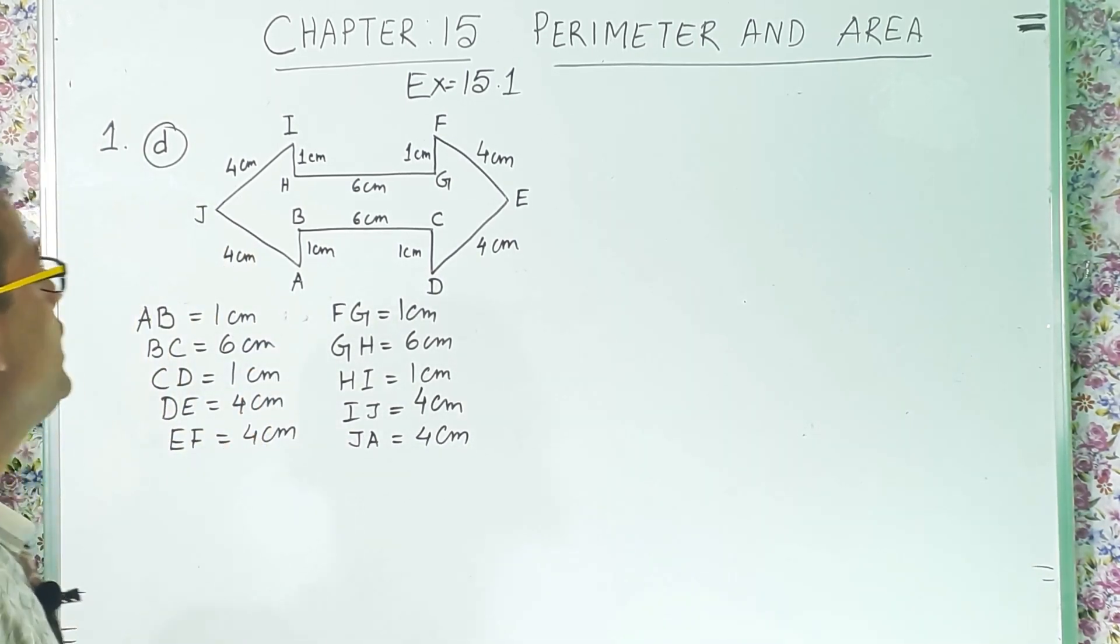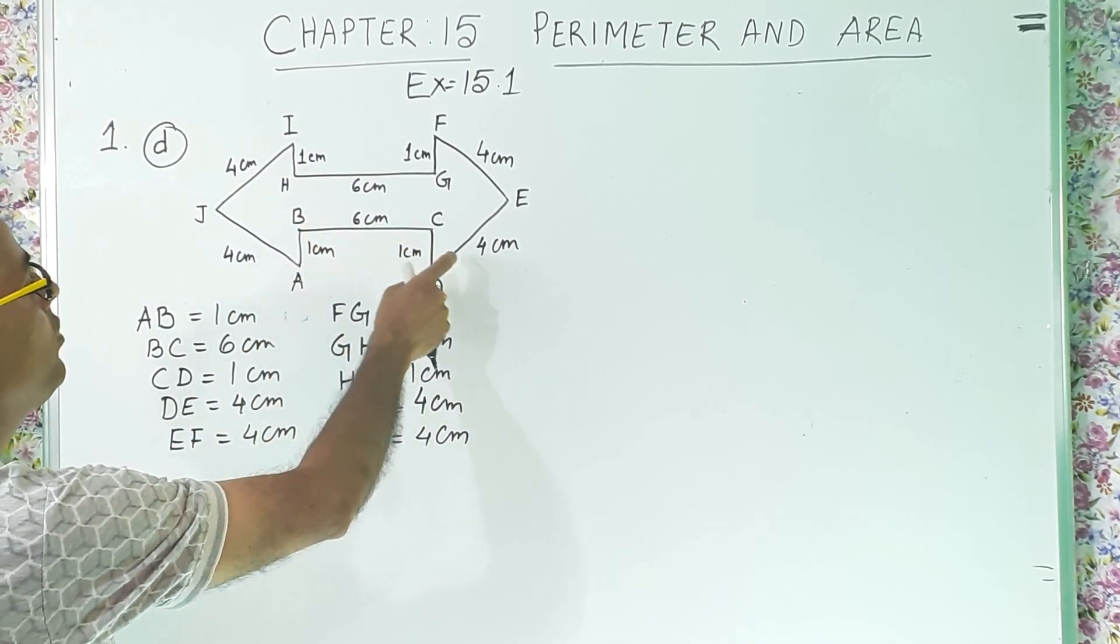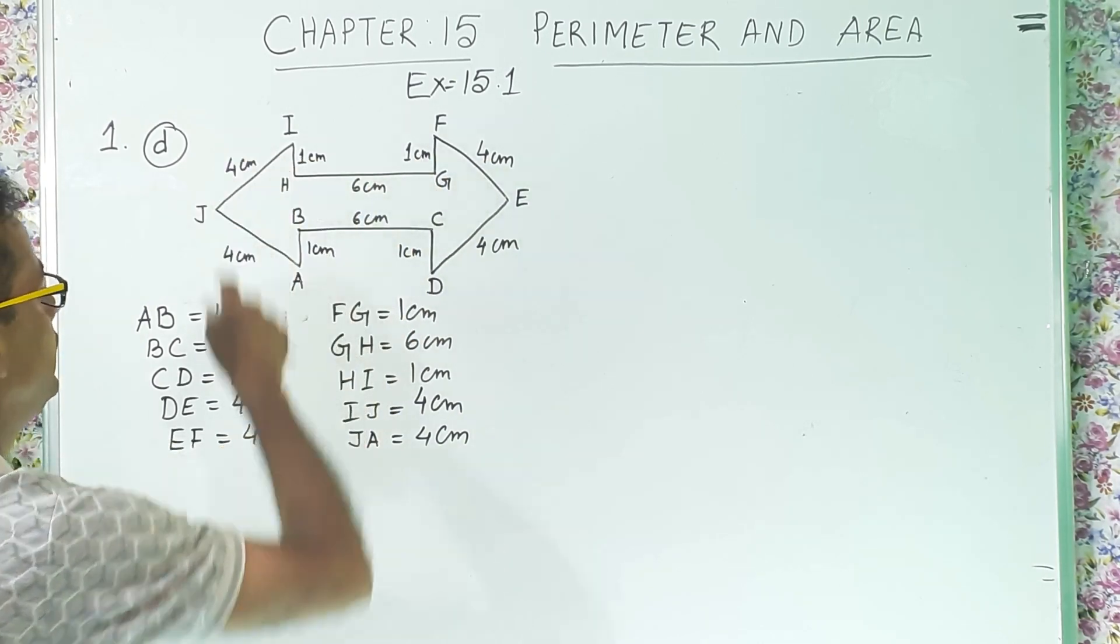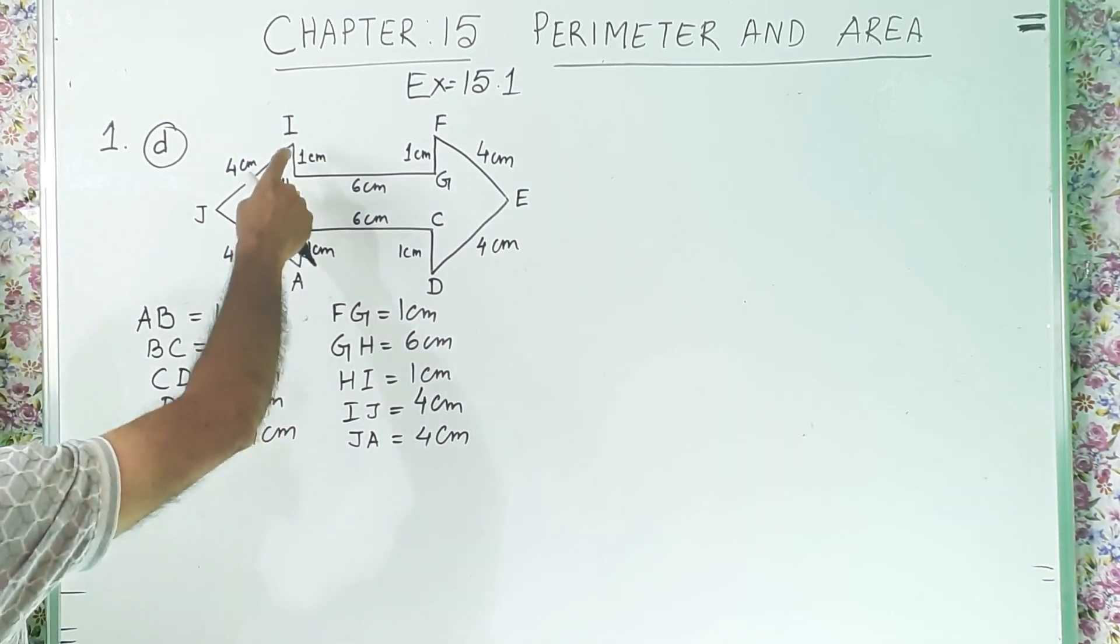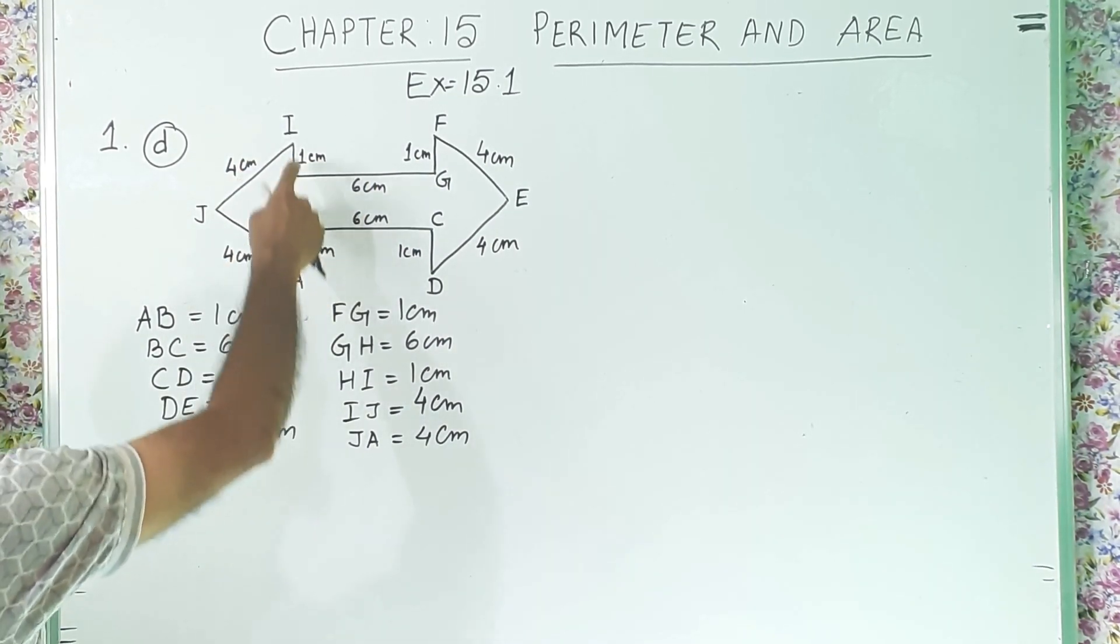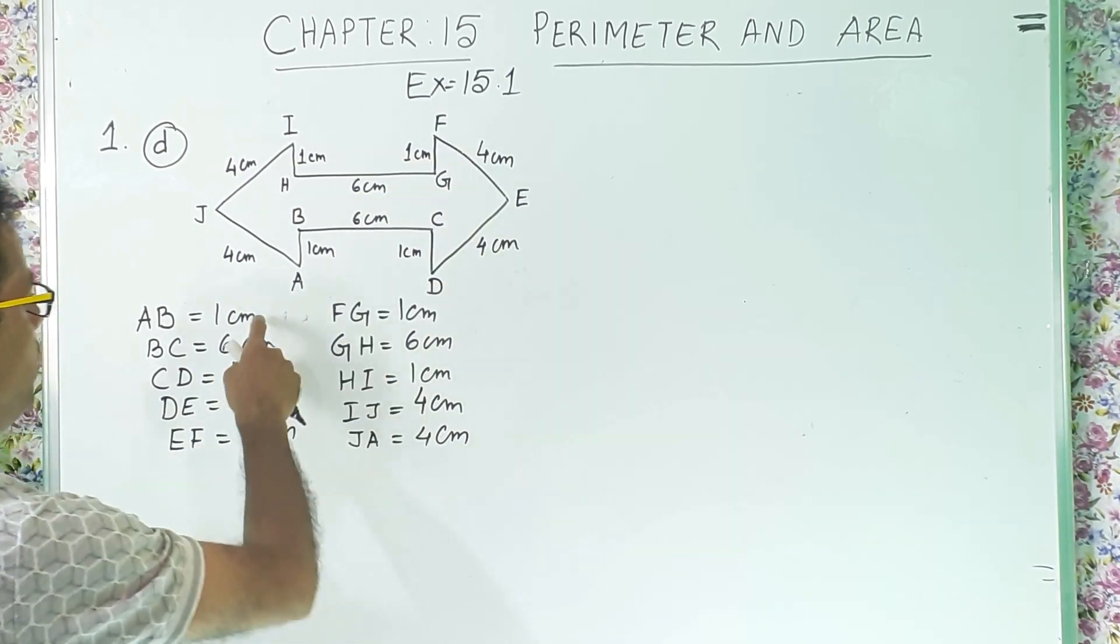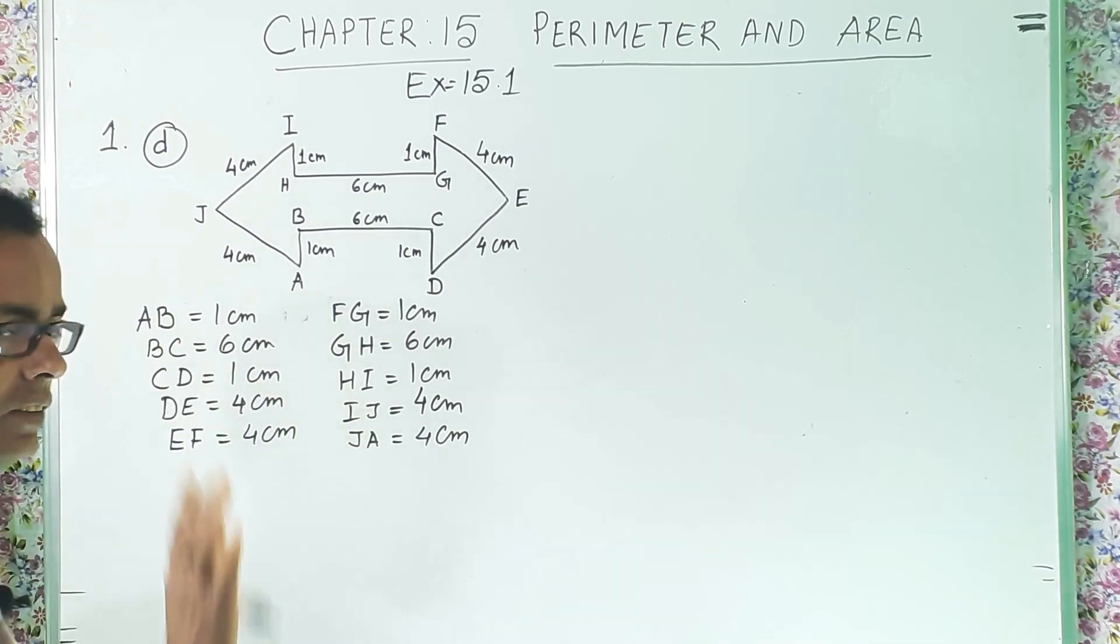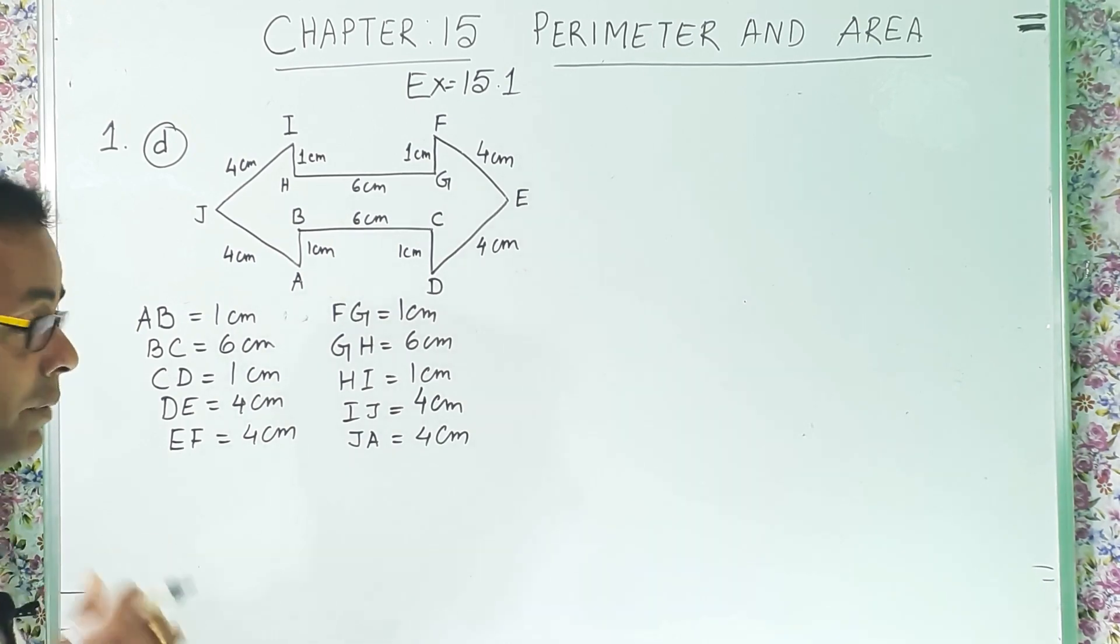See here, how many sides are here? 1, 2, 3, 4, 5, 6, 7, 8, 9, 10. So, here also, let us see. So, 10 informations we have written. Now, now we will find out the perimeter.